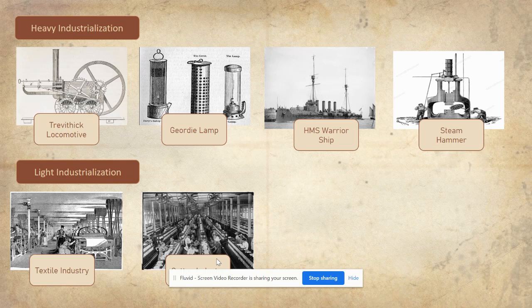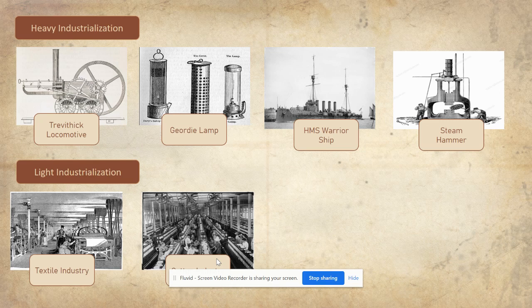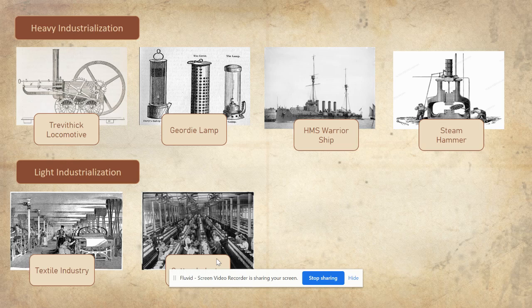George Stephenson created the first public intercity rail line in the world, connecting the great northern cities of Manchester and Liverpool. Cotton arriving from plantations in America would supply the textile mills of Manchester, with finished cloth sent to Liverpool. In 1852, the British shipbuilding company Palmer Brothers & Co. opened and built the first iron warship, HMS Warrior. At the end of the 19th century, the industry of Great Britain reached its peak, with the textile industry producing around 8 billion yards of cloth.